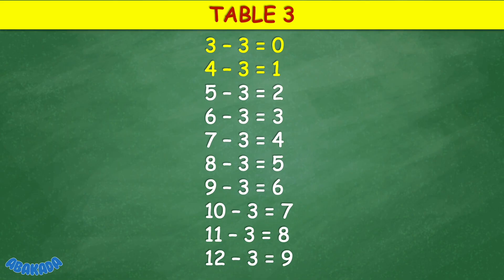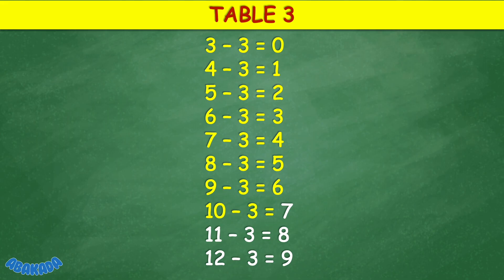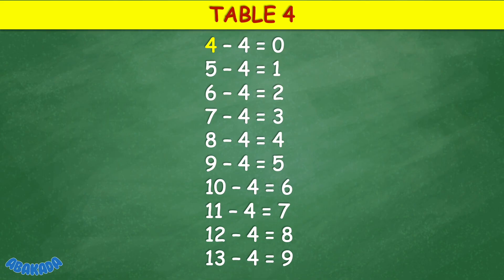Table 3: 3 minus 3 equals 0, 4 minus 3 equals 1, 5 minus 3 equals 2, 5 minus 2 equals 5, 6 minus 2 equals 5, 7 minus 3 equals 4, 8 minus 3 equals 5, 9 minus 3 equals 6, 10 minus 3 equals 7, 11 minus 3 equals 8, 12 minus 3 equals 9.